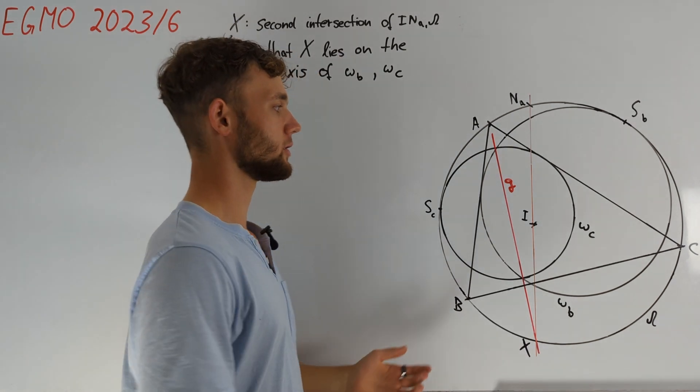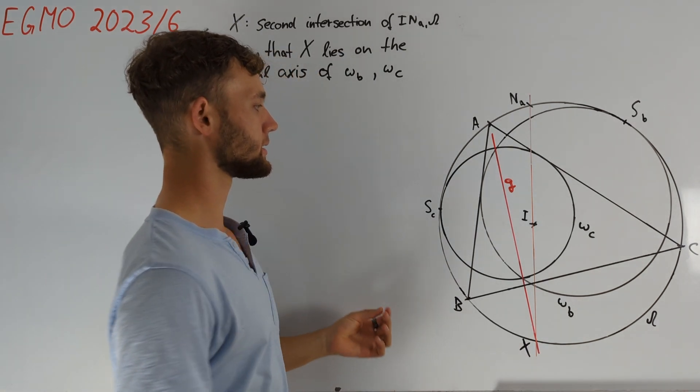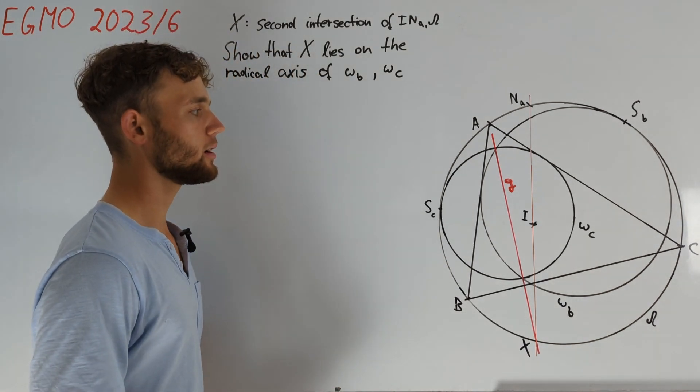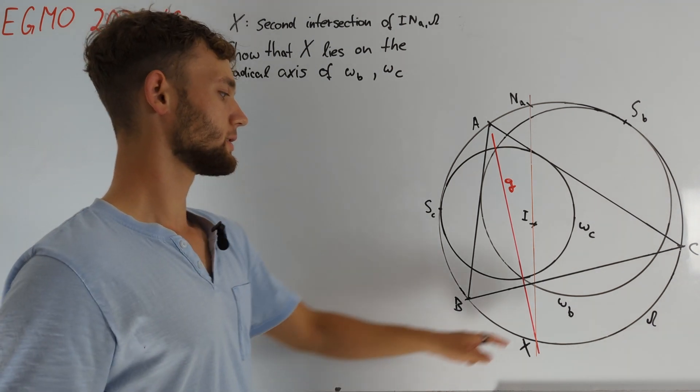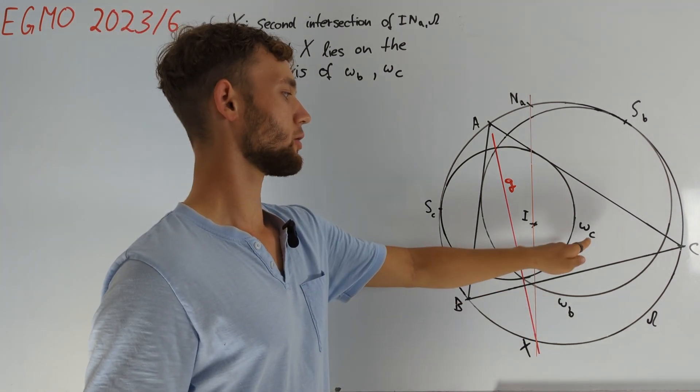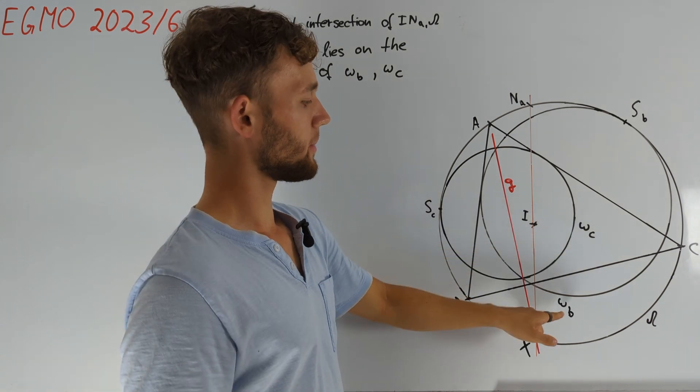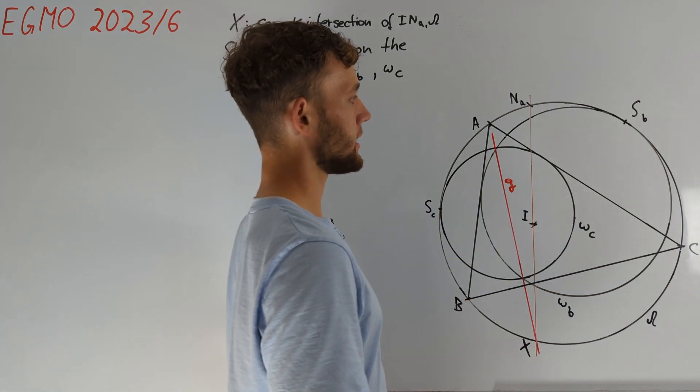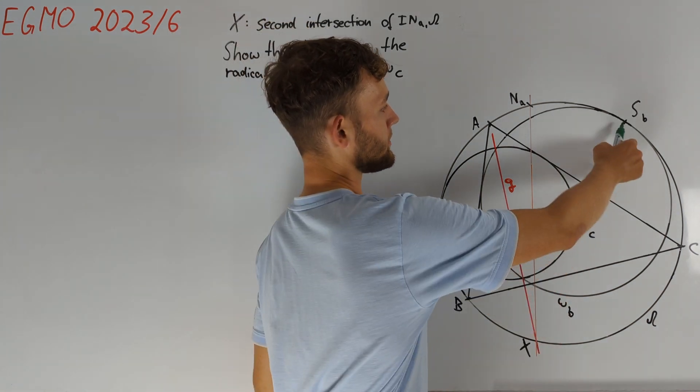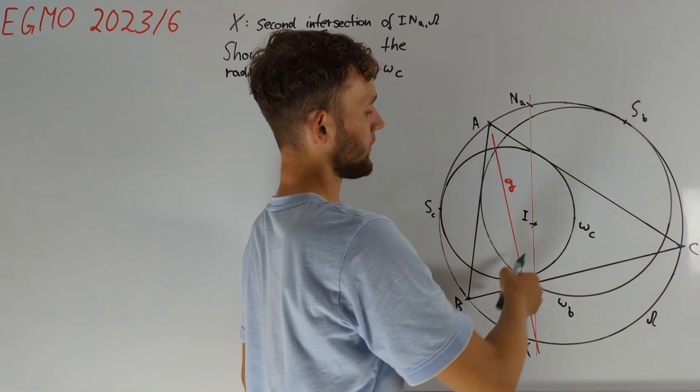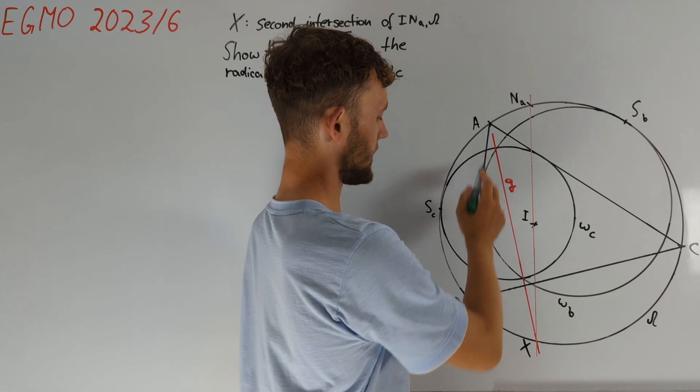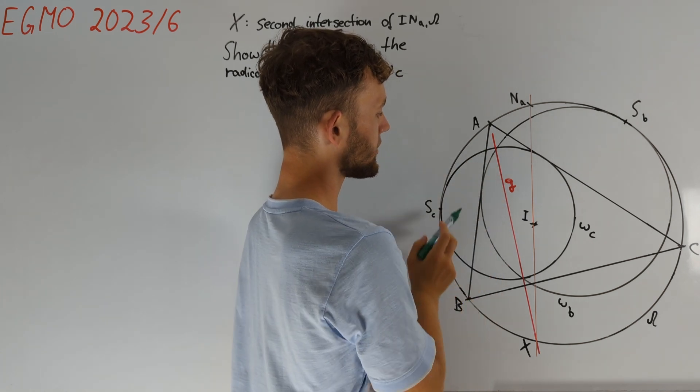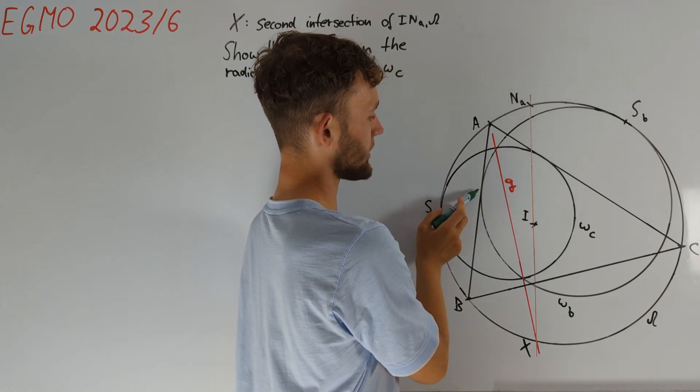The first question when solving a geometry problem is not necessarily what is the first step, but how do we draw a good diagram. Here the main difficulty is constructing circles omega_B and omega_C. For omega_B we already know that its center must lie on the line through SB and the center of circle omega. But we also need to use the tangency of omega_B and AB. So let us try to understand this tangency point better.